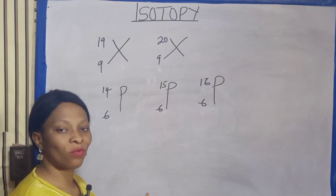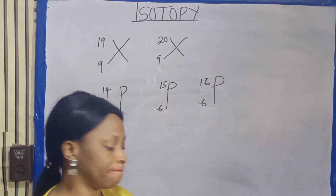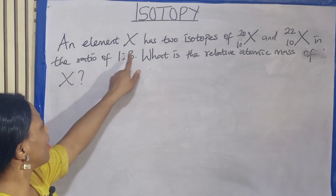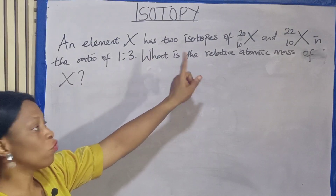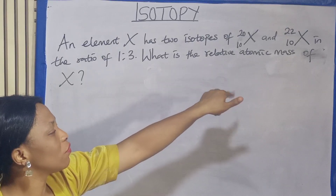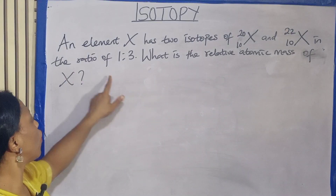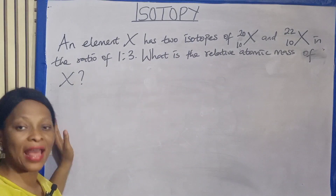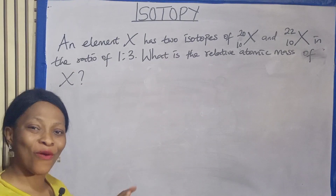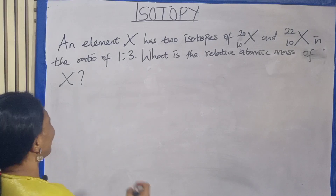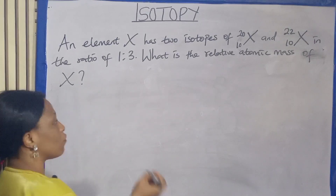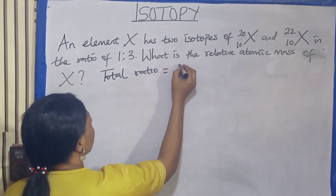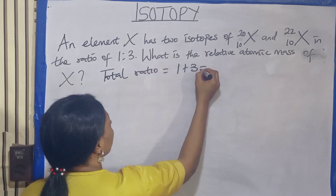Now let's look at the questions attached to this topic. An element X has two isotopes: 20-10-X and 22-10-X in the ratio of 1 to 3. What is the relative atomic mass of X? It is very simple. The first thing to do is to find the total ratio. Total ratio equals 1 plus 3, which gives us 4.